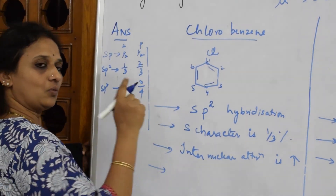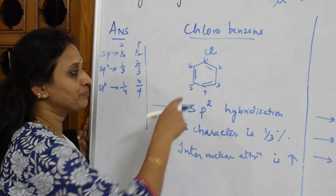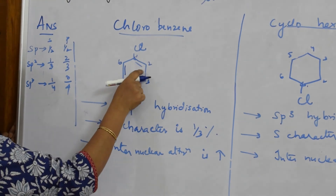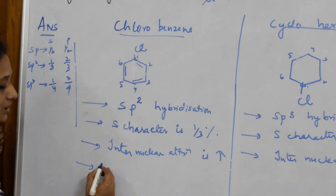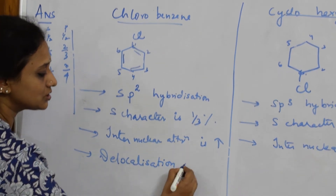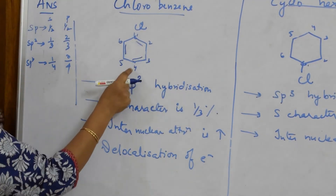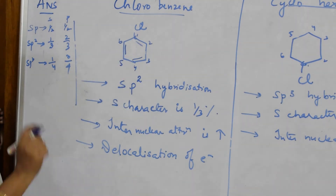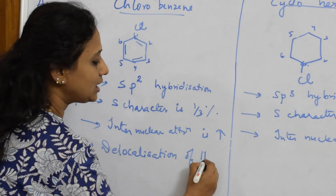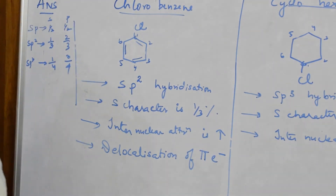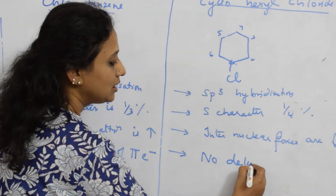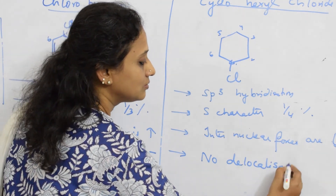The second key difference is the presence of pi bonds in chlorobenzene. When pi bonds are present, delocalization of pi electrons occurs — electrons shift around the ring. In cyclohexyl chloride, there are no pi bonds, so no delocalization of pi electrons is observed.